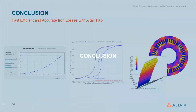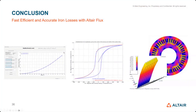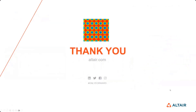To conclude, we've seen that we have methods to do fast, efficient, and accurate iron losses with Altair Flux. Make sure to check all the new features when they are available. I'll put a link in the chat for the documentation on iron losses — we keep adding features in new versions. I hope you learned one thing or two through this presentation. Thank you.